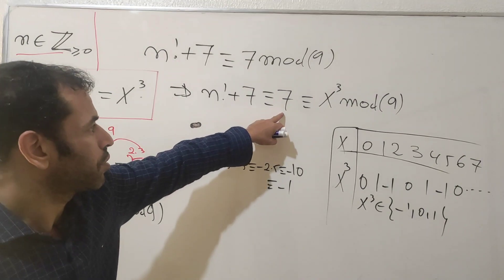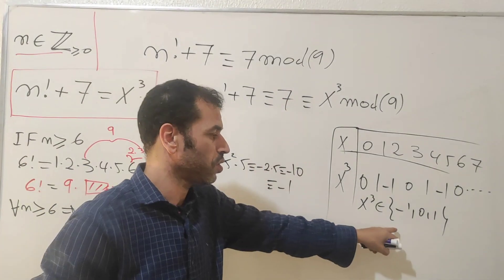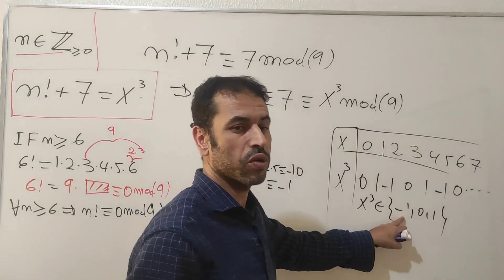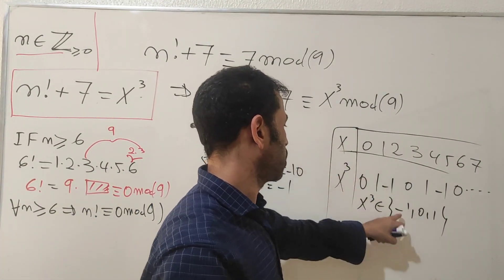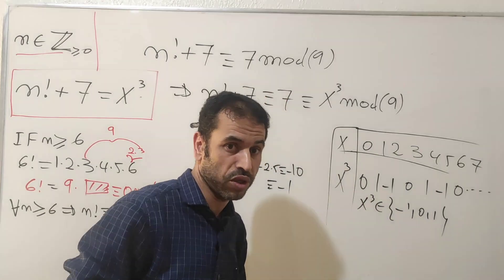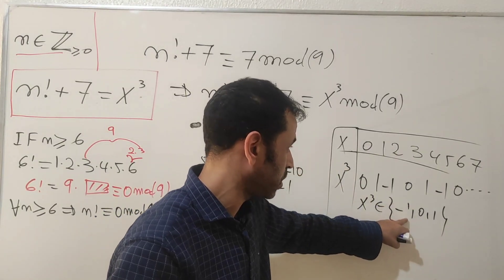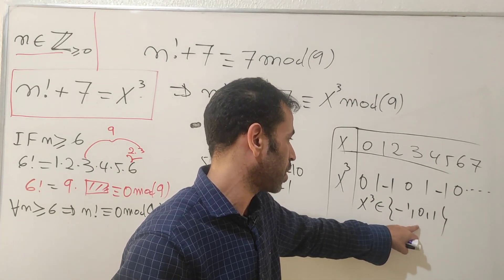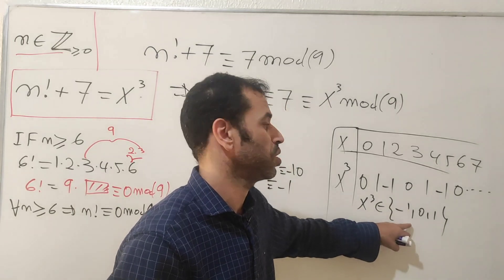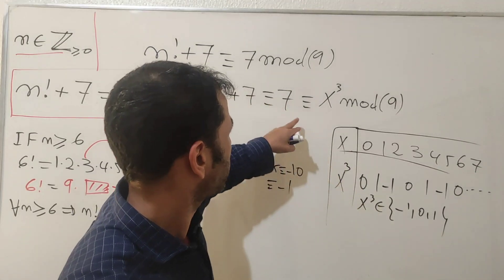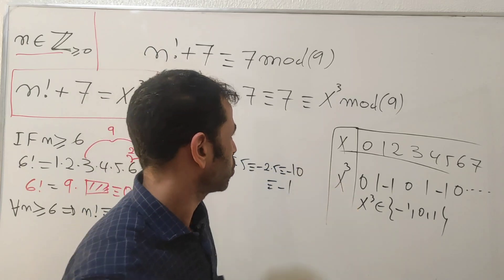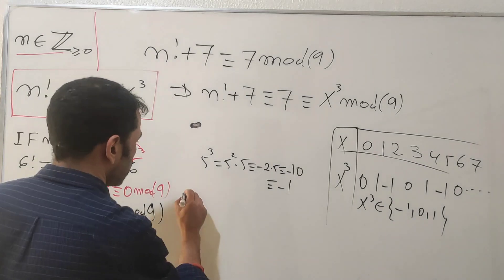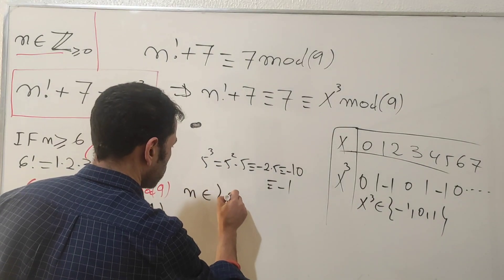However, we need the value seven as a remainder, and seven is absent from the set {-1, 0, 1}. Note that minus one mod nine is equivalent to eight mod nine, not seven. Since we have eight but need seven, this equation has no solution for n greater than or equal to six. Therefore n must be in the set {0, 1, 2, 3, 4, 5}.